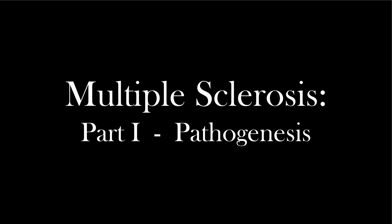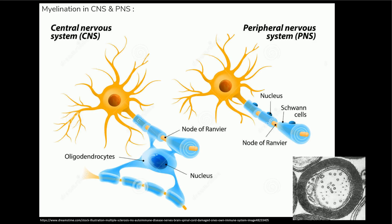For this first section we need to talk about some fundamentals of how the central and peripheral nervous system work so that we can better understand how multiple sclerosis works. If we take a look at the different parts of the nervous system we can break it up into two basic sections: the central nervous system and the peripheral nervous system. Both of them contain neurons, which are the yellow structures depicted in the diagram.